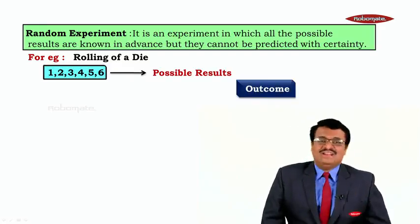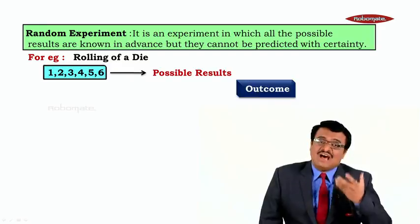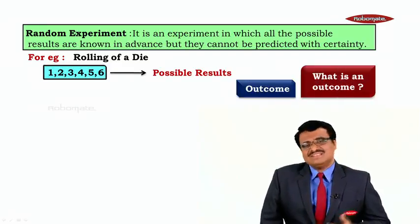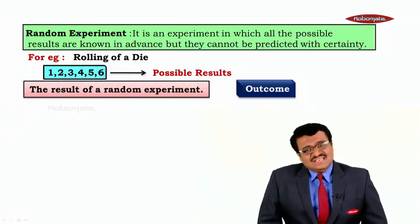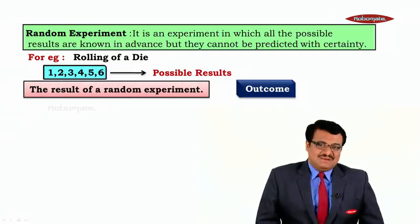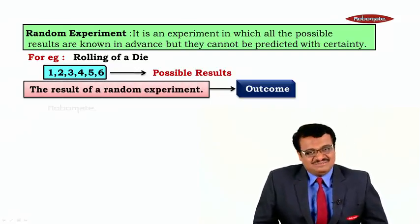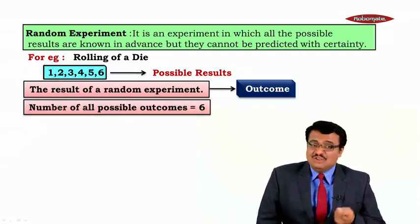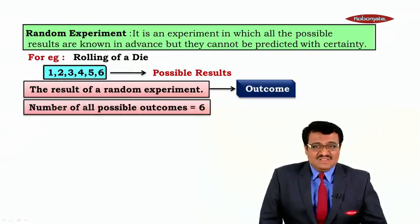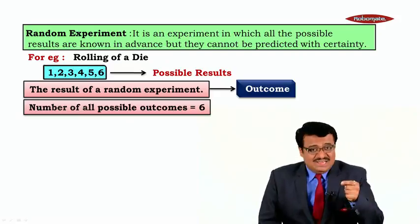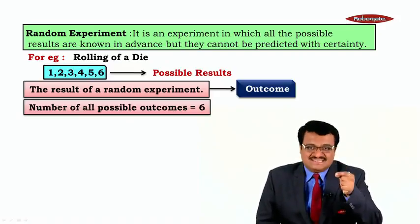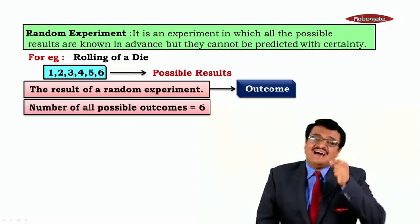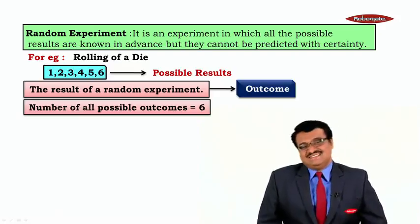Now the next term we are going to understand is called outcome. What is outcome? The result of the random experiment is called an outcome. Now, number of outcomes — how many outcomes are possible when you roll a die? 1, 2, 3, 4, 5, 6. If you count the outcomes, there are 6. So the number of all possible outcomes of this experiment are 6.